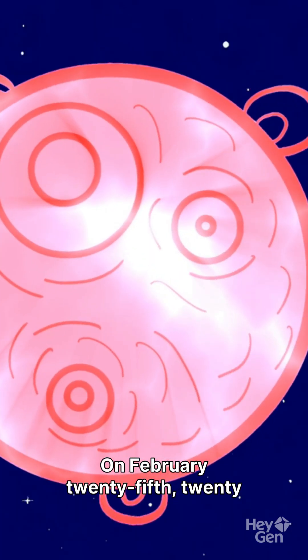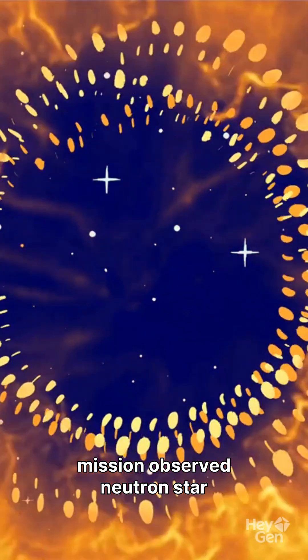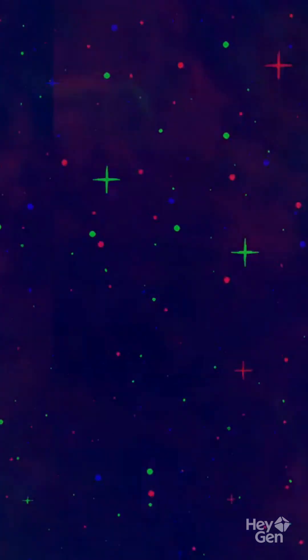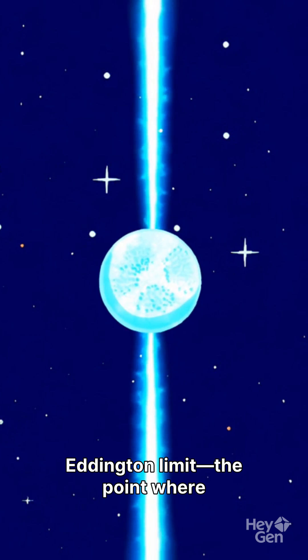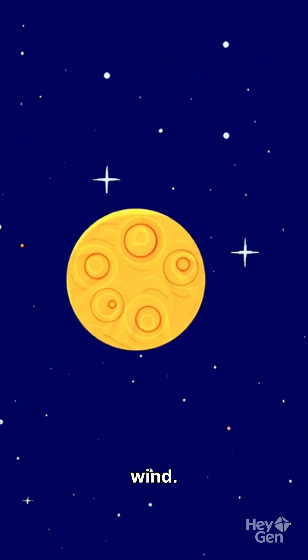On February 20th, 2024, the ZRISM space mission observed neutron star GX13 plus 1. It was reaching the Eddington limit, the point where radiation becomes so intense it blows matter back into space as a wind.